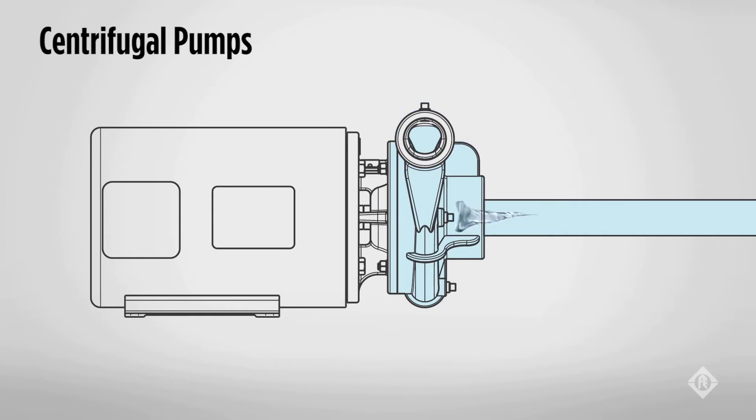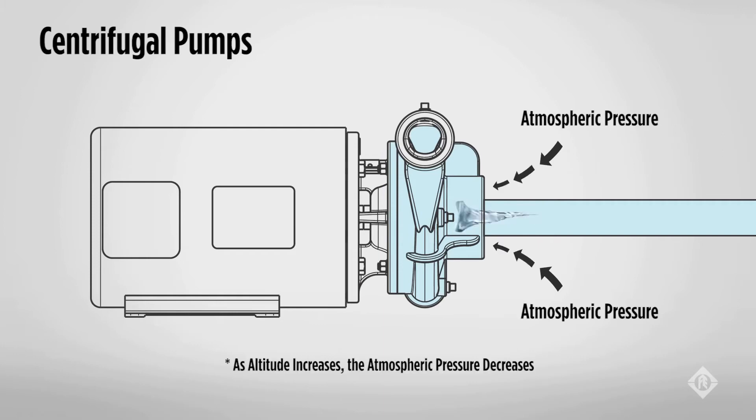The vacuum that is formed at the eye of the impeller creates a pressure differential with the outside atmospheric pressure. With the atmospheric pressure being greater than the vacuum inside the pump, the outside pressure pushes a continual flow of liquid into the pump. As we move up in altitude, the atmospheric pressure is reduced and the force pushing the water into the eye of the impeller is also reduced, diminishing the performance of the pump.